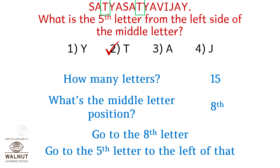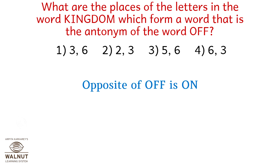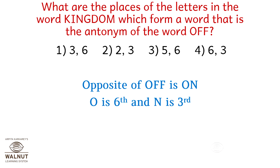Next question: What are the places of the letters in the word 'kingdom' which form a word that is the antonym of 'off'? Options: one is 3,6; two is 2,3; three is 5,6; four is 6,3. The opposite of 'off' is 'on', so we look for letters O and N. O is the sixth letter and N is the third letter, so the answer is 6, 3 — option four.